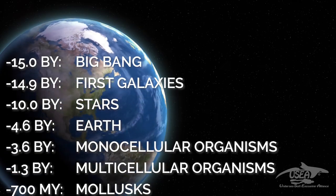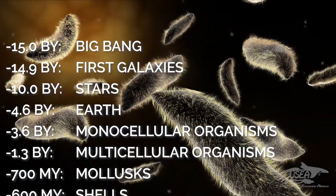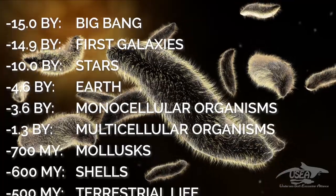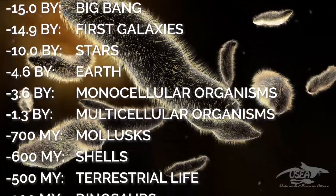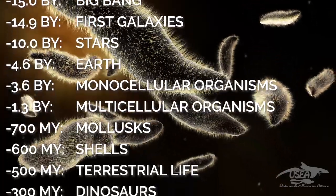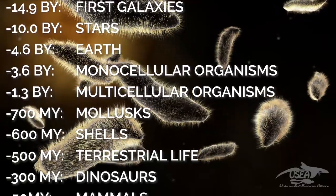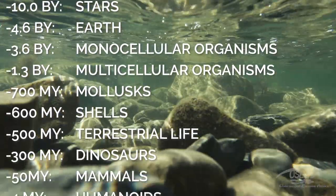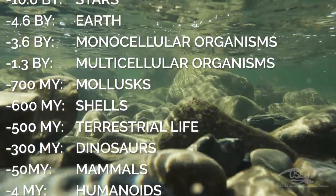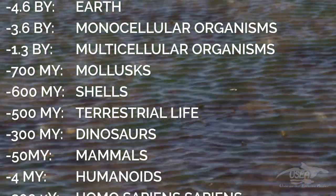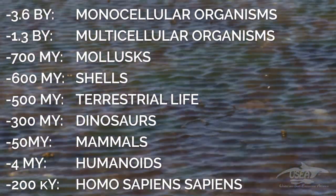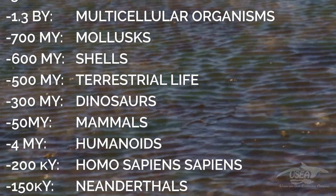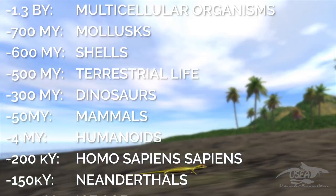Life on Earth occurred 1 billion years later. It was monocellular organisms. And we had to wait until 1.3 billion years ago to see pluricellular organisms. Then life went to mollusks — the shell — and life got out of the water, out of the ocean, to invade the land.